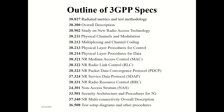Spec 38212 covers multiplexing and channel coding — how multiplexing happens and what coding methods are used. There is also a spec for physical layer procedures for control and data. You can see NAS and security architecture covered as well. Spec 36508 shows test setup diagrams and common procedures — most other specs refer to 36508 for that information.